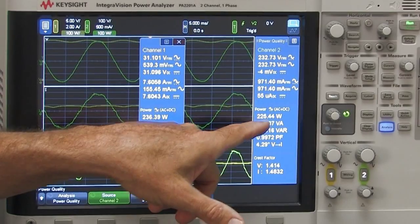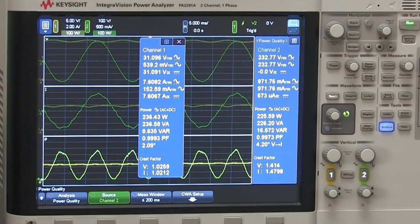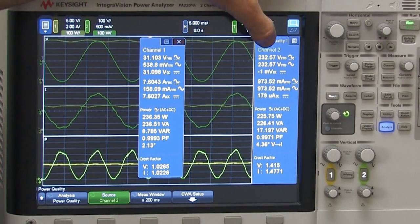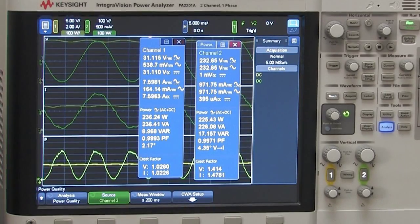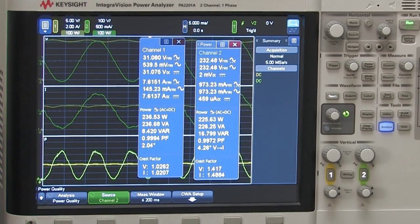So as you would expect, it's a little bit lower than the input power. Input power has to be a little bit greater. And this can do direct efficiency calculations, which is really the emphasis of this video here today.